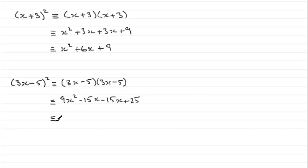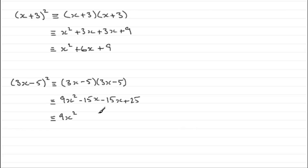And finally, minus 5 times minus 5 which is plus 25. So what happens is we end up squaring the first term — 3x squared is 9x squared — we end up with two lots of the product: 3x times minus 5 is minus 15x, doubled gives minus 30x, and finally plus 25 from squaring the last term.